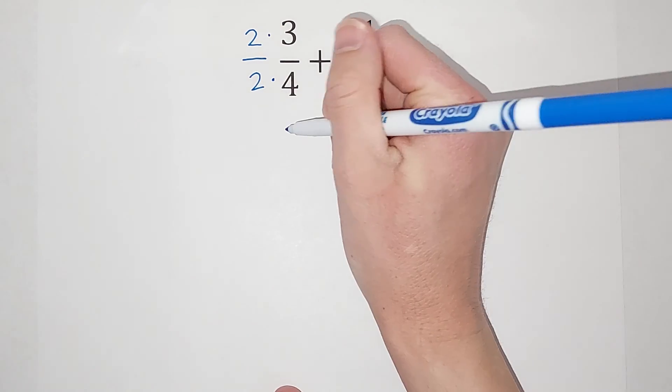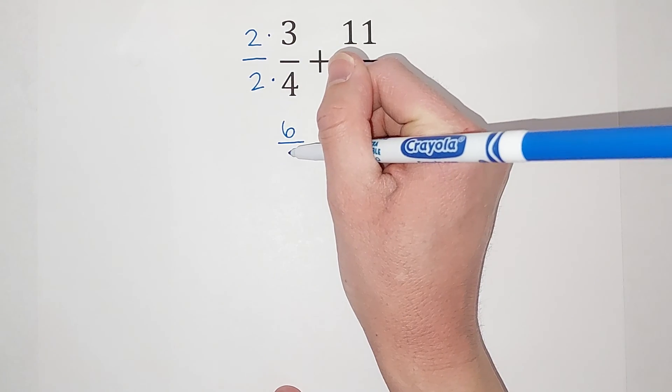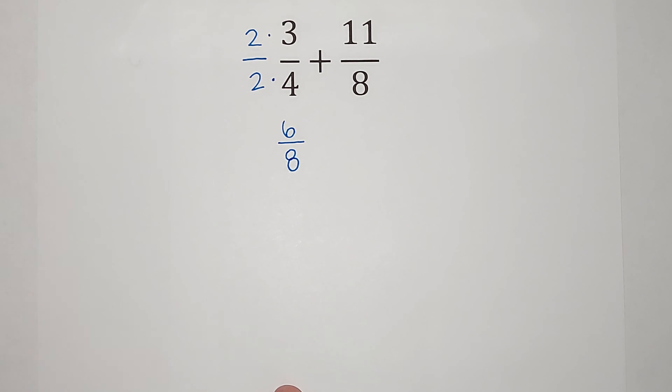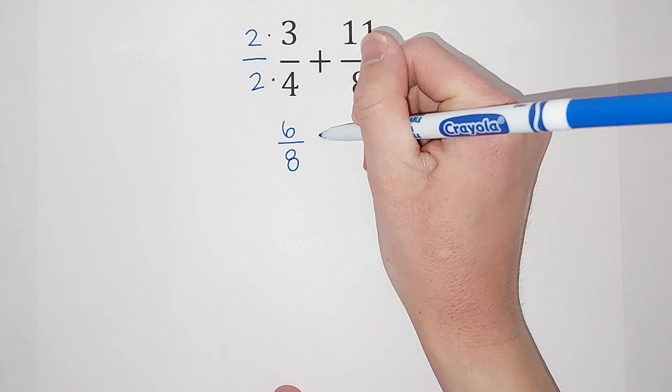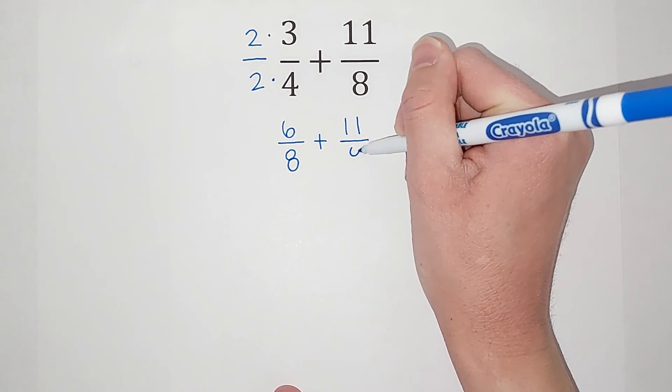So when I multiply these, I do two times three gives me six, two times four gives me eight. And now I have a denominator of eight. So three fourths and six eighths are the same fraction. They just look a little different. And we are still adding our 11 eighths over here.